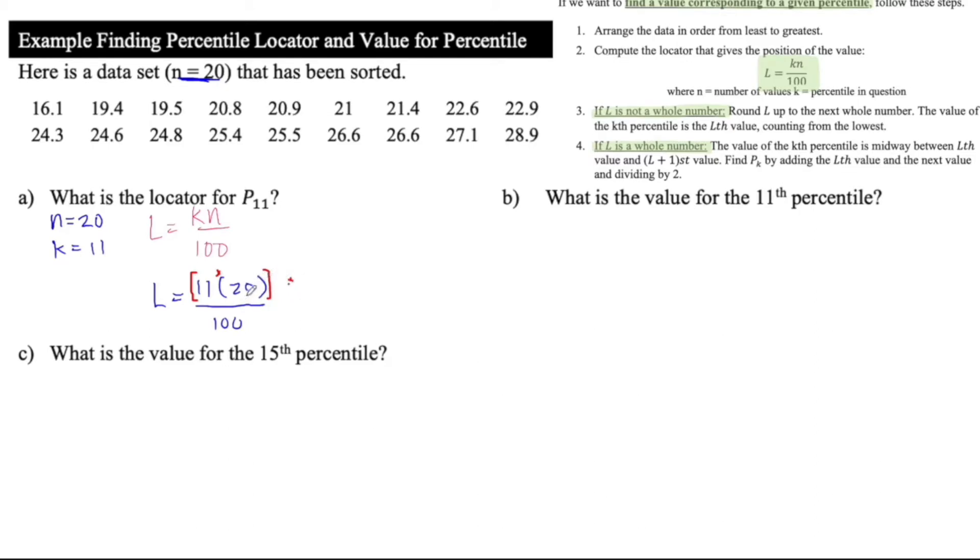You should try making sure you know how to use your calculator because that's one of the most common mistakes is that students don't know how to work with fractions, especially when there's multiple things happening. So if you grab your calculator and you tested it out, you should get that the L value is going to be 2.2.